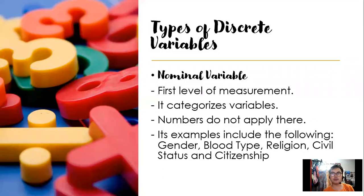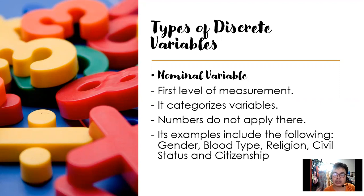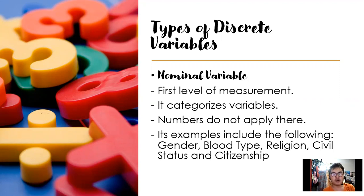When we say nominal variable, it only has categories — numbers have no relevance here. There is no quantitative value. Examples include gender, blood type, religion, civil status, and citizenship. These have no relation to numbers — it involves qualitative description.